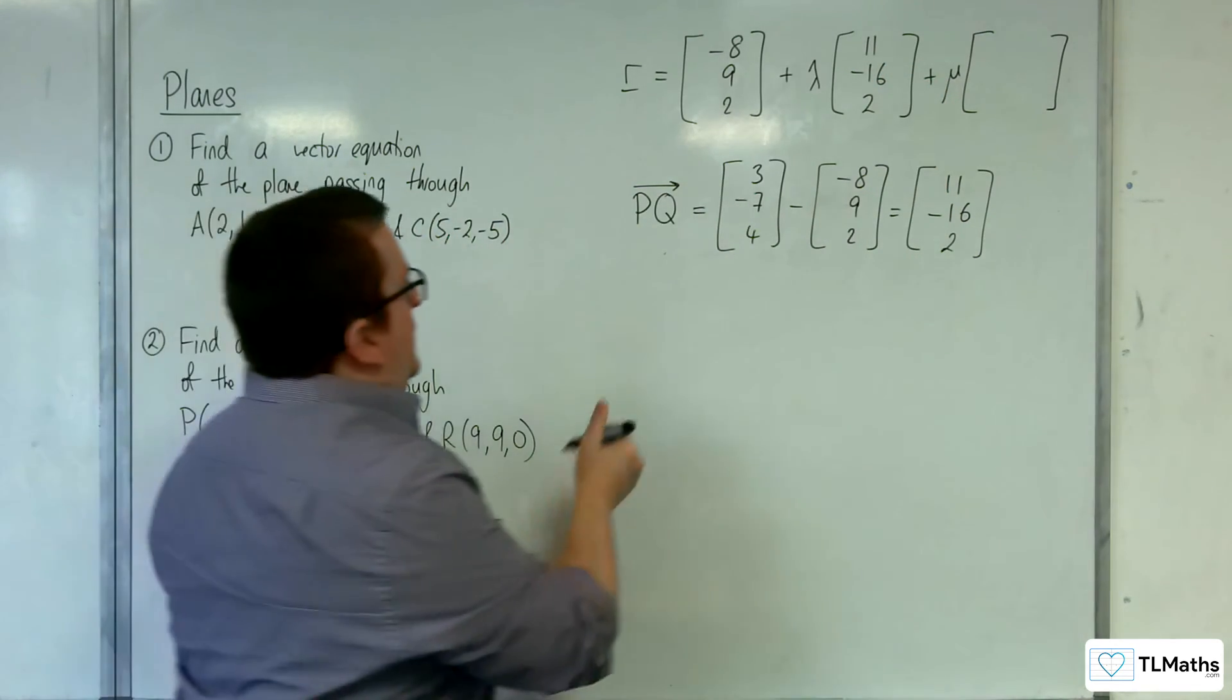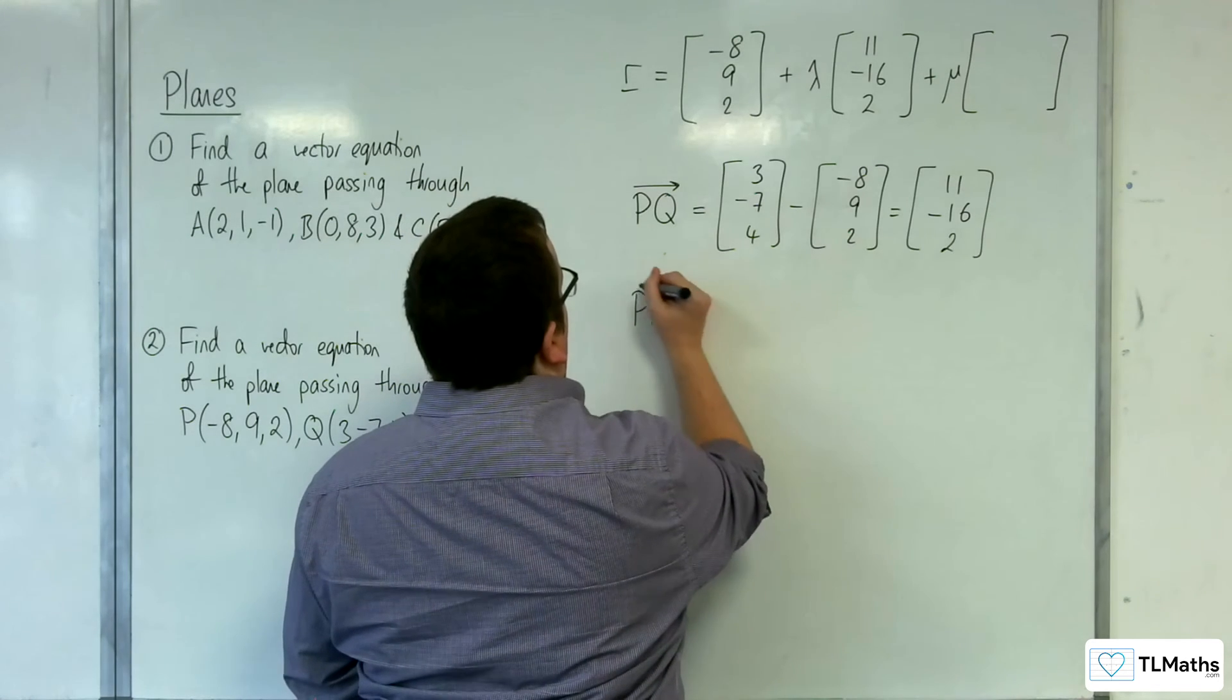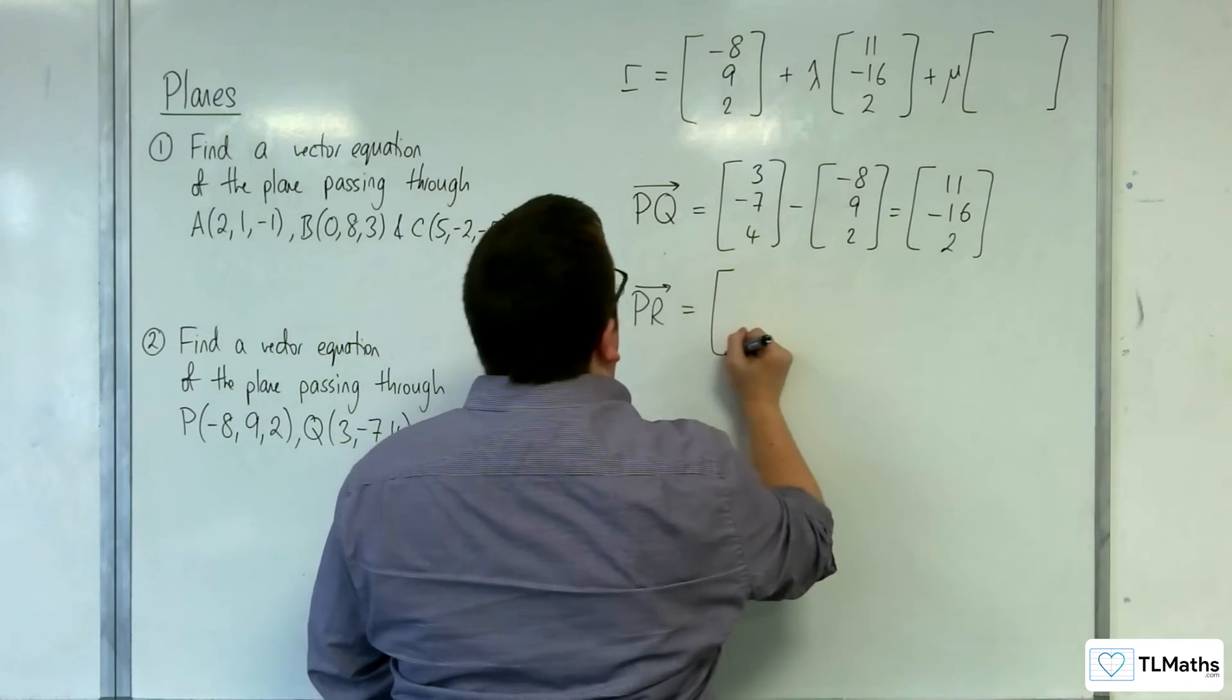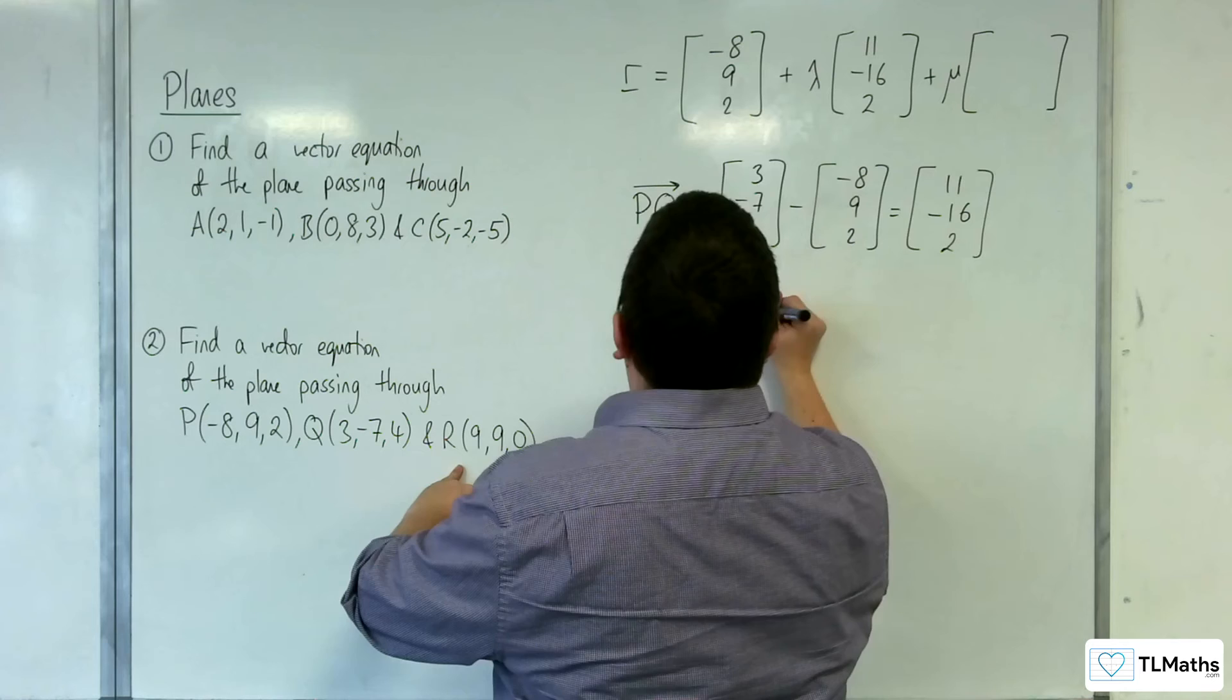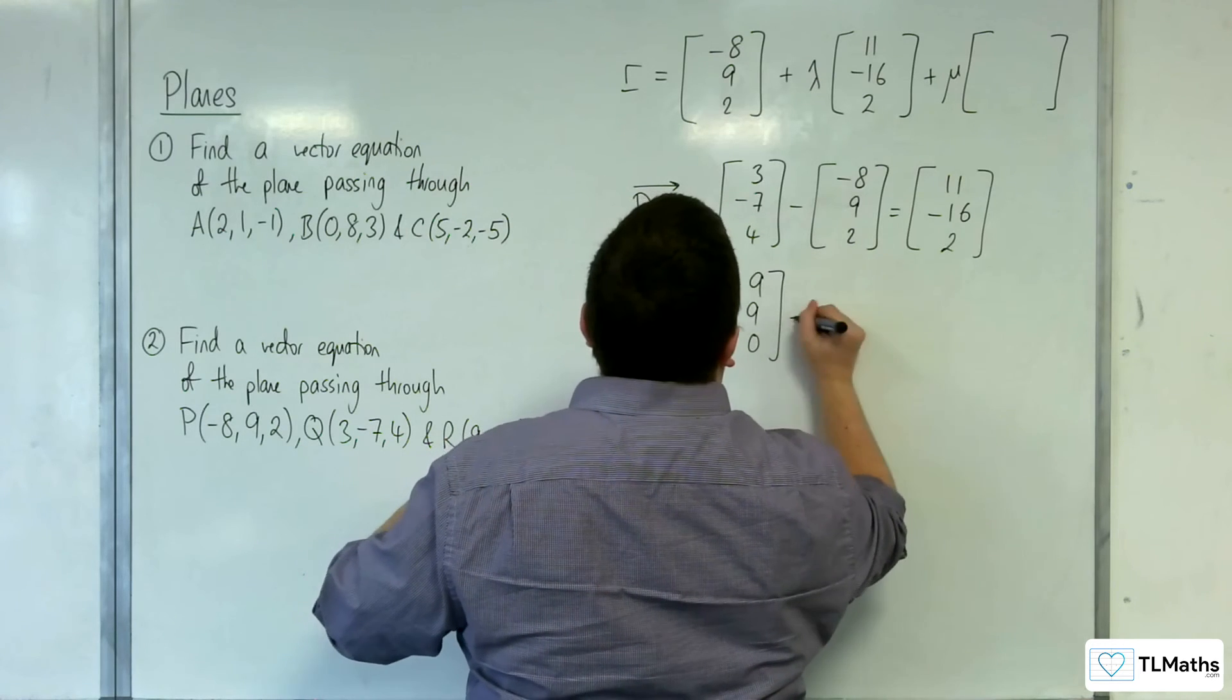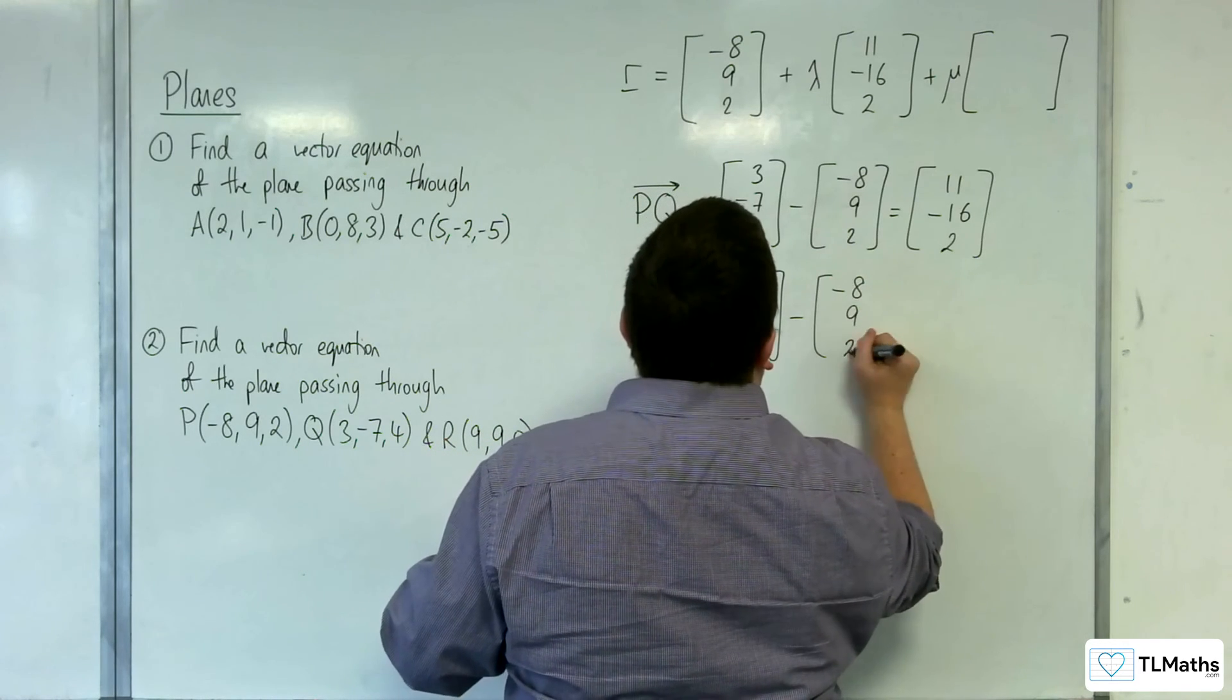And I'll use PR as the second direction vector. So that's OR, 9, 9, 0, take away minus 8, 9, 2.